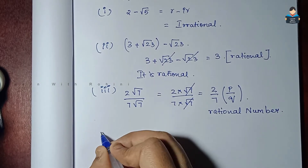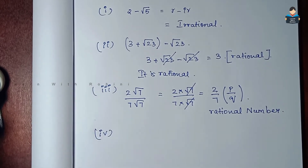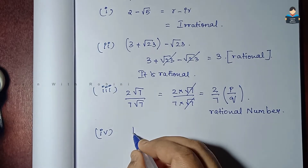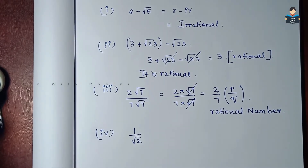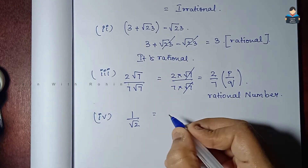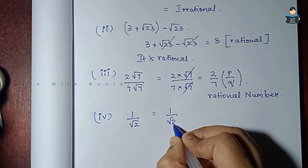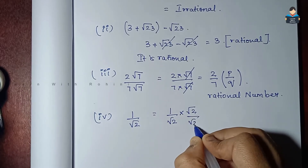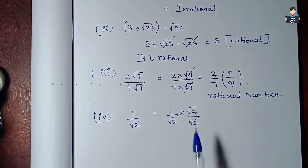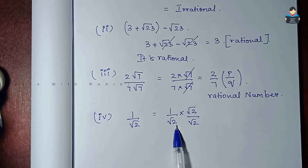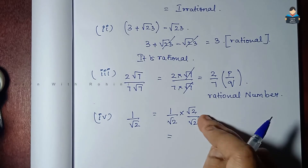Fourth subdivision: 1 divided by √2. We rationalize by multiplying both numerator and denominator by √2, giving √2 over √2 squared.